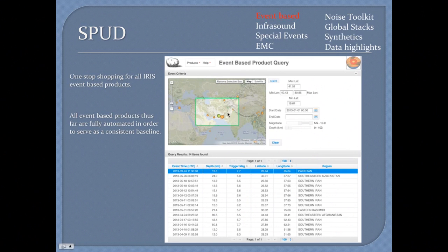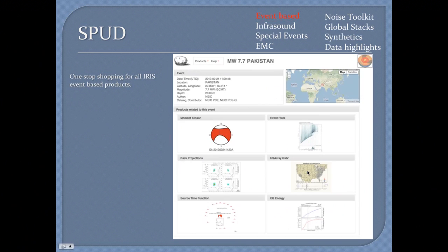The primary portal for the majority of our data and certainly for all event-based products is SPUD. SPUD is actually a database, but you can just think of it as a website. It has this really easy and simple to use intuitive interface with a Google map. There's very simple controls for magnitude, depth of event, start times. When you click on an event, it shows all the products that have been automatically generated for this event. These usually get generated within an hour to a few hours after origin time and they're fully automated.